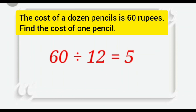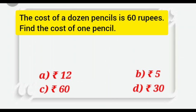60 divided by 12. And when we will divide 60 by 12, our answer will be 5. 60 divided by 12 is 5. Cost of 1 pencil is rupees 5. So, option B, rupees 5 is the correct answer. Put a tick here.